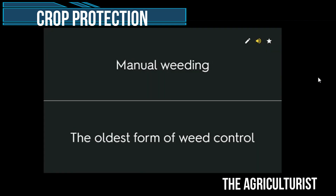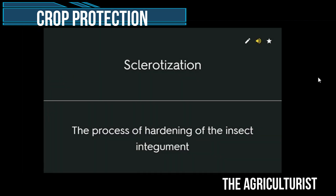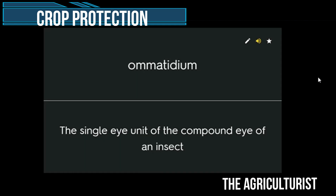Manual weeding — the oldest form of weed control. Sclerotization — the process of hardening of the insect integument. Ommatidium — the single eye unit of the compound eye of an insect.